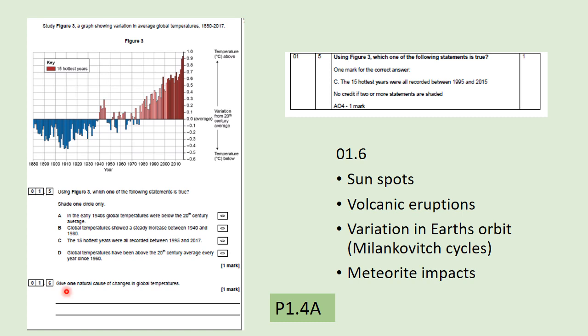Question 1.6 asks for one natural cause of changes in global temperatures — something not linked to human pollution. Possible answers include sunspots, where the sun is sometimes hotter and emits more radiation (or cooler with less radiation when sunspots are present); volcanic eruptions producing ash in the atmosphere; variations in Earth's orbit known as Milankovitch cycles, which trigger ice ages by changing how far the Earth is from the Sun; and meteorite impacts.